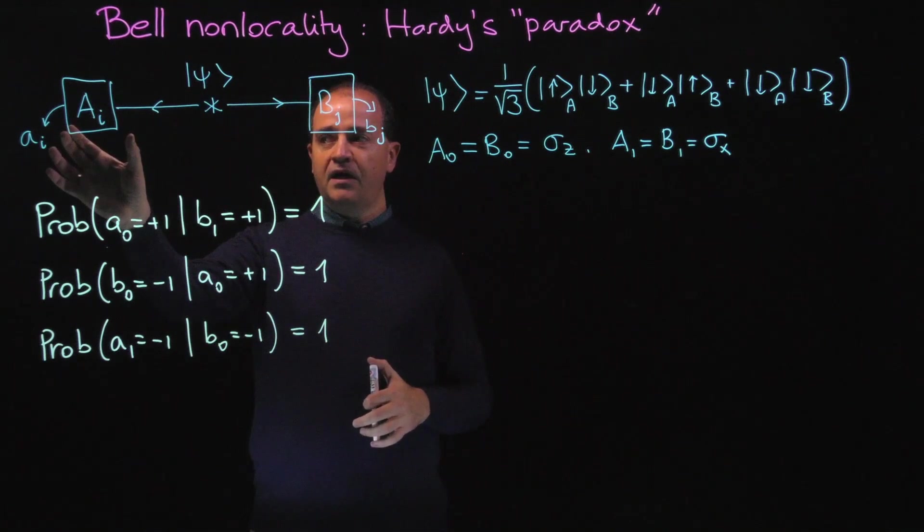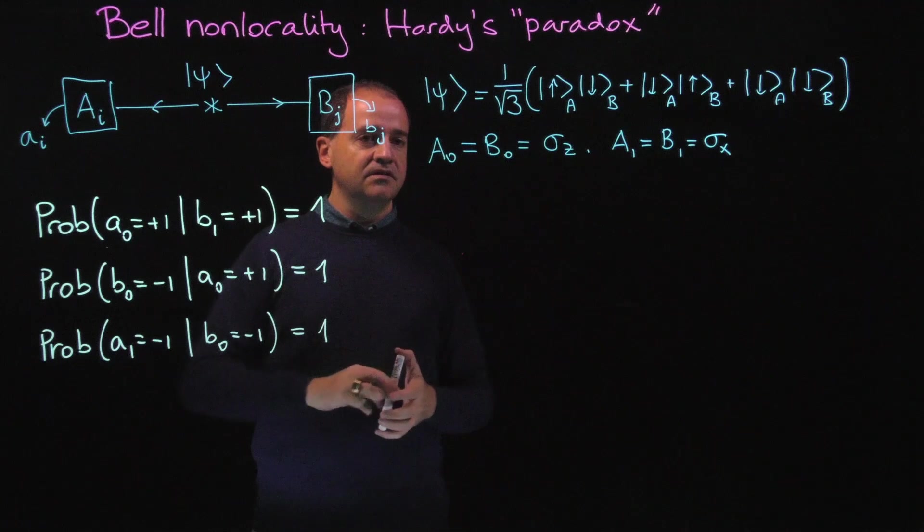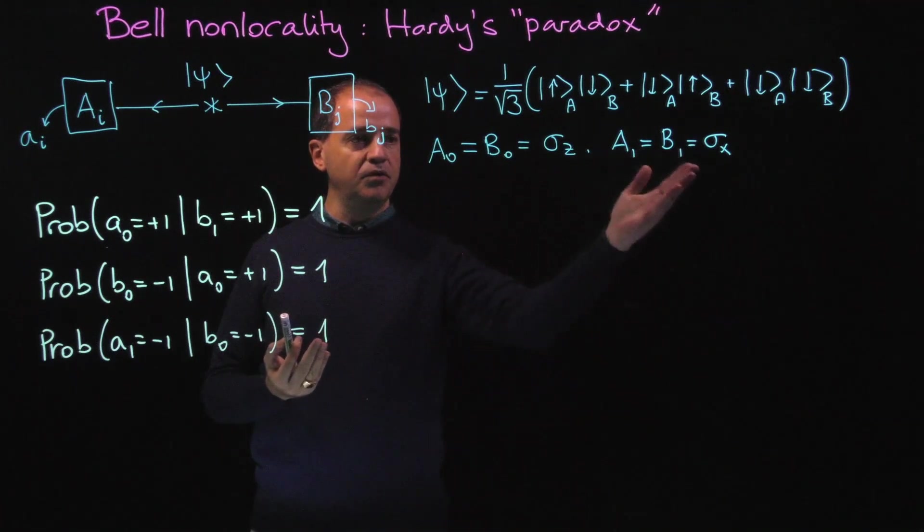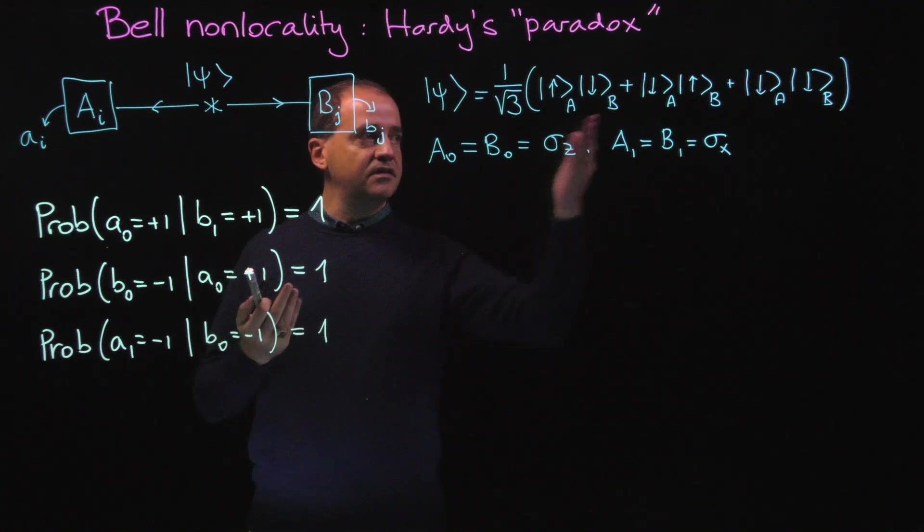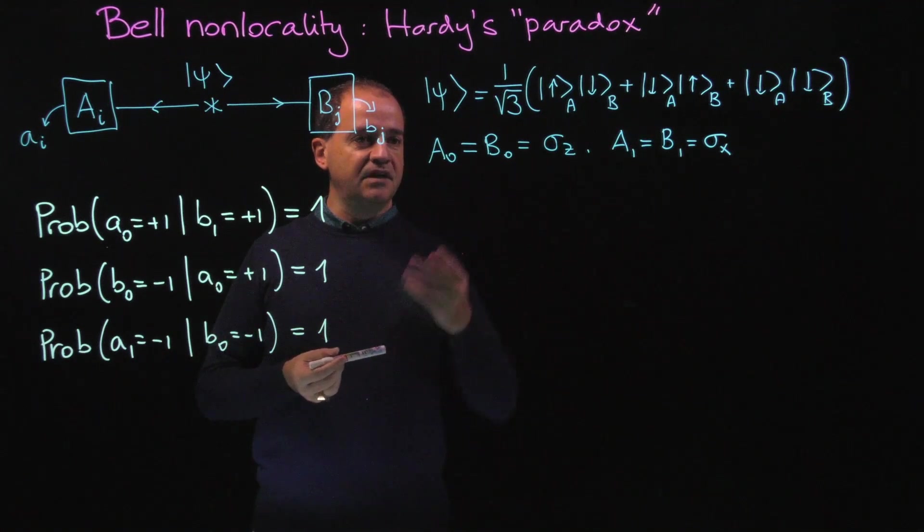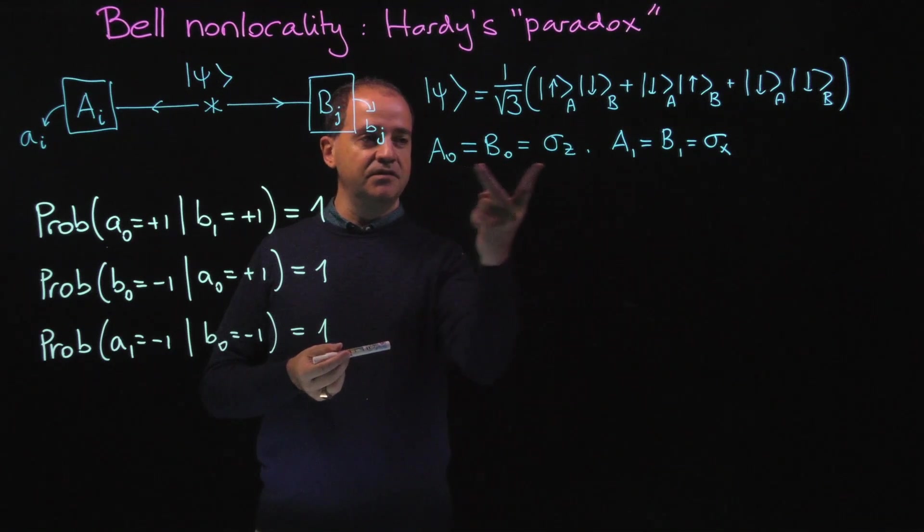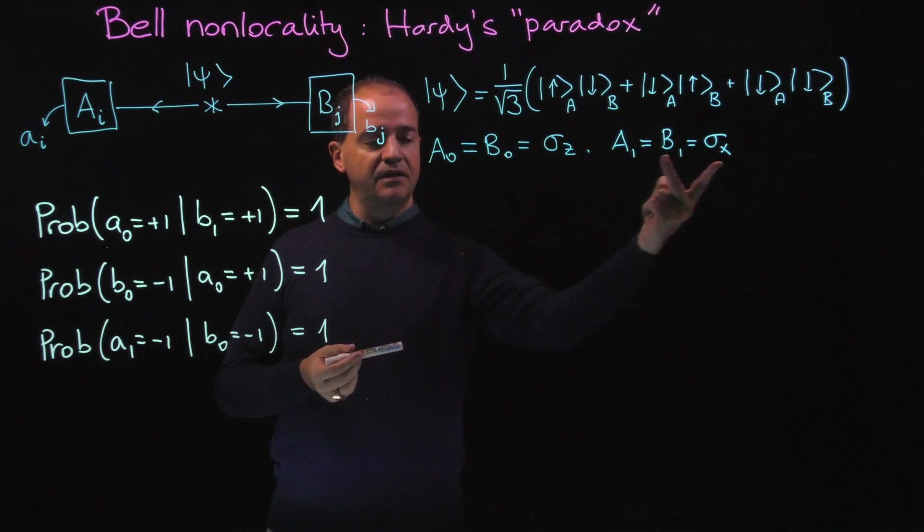Alice can perform one of two measurements: A0 or A1. Similarly, Bob can perform one of two measurements: B0 or B1. In this basis, these measurements are the same for Alice and Bob. The measurement at level 0 is sigma z, the measurement at level 1 is sigma x.